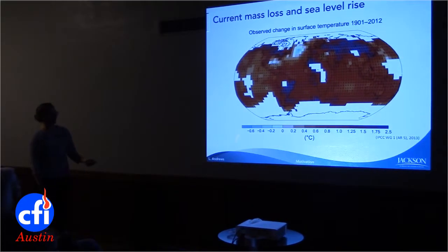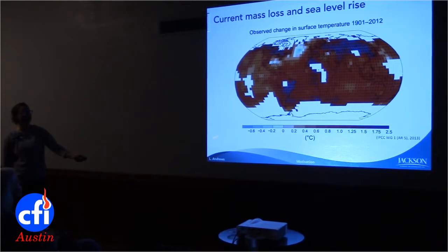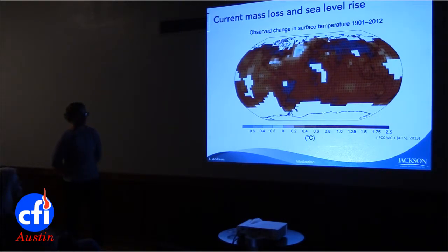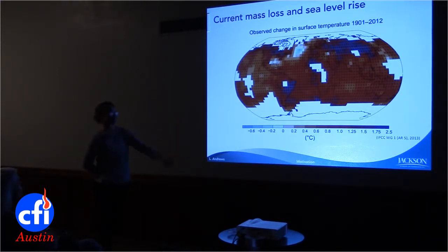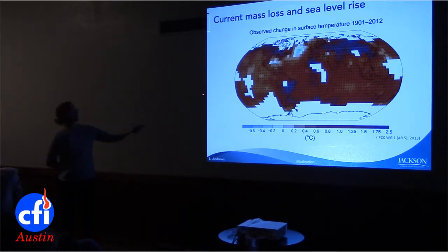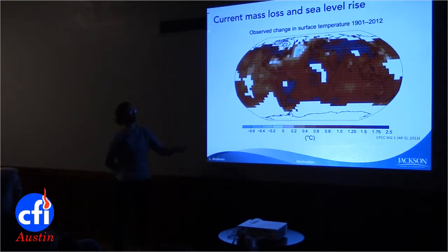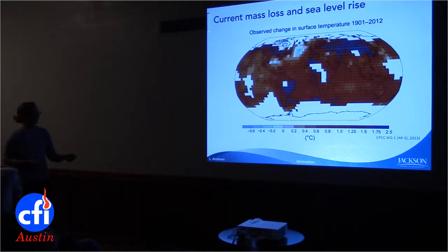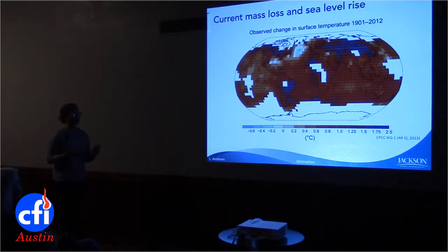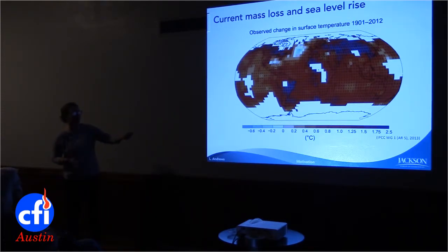This plot shows the change in annual temperature between 1901 and 2012 for the entire globe. Where there are white areas, we don't have data for that entire century — we don't have a lot of data for the polar regions. What's really important to note is that when we move to higher latitudes, especially in the northern hemisphere, we see much more warming: an increase of 2.5 degrees versus 1 degree versus 0.5 degrees. As our climate changes and air temperatures increase, we're more adversely affecting our Arctic and Antarctic regions.